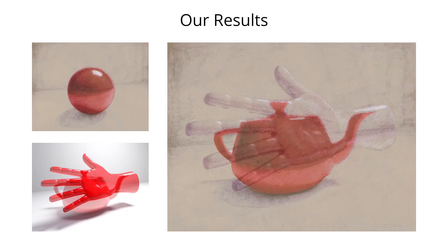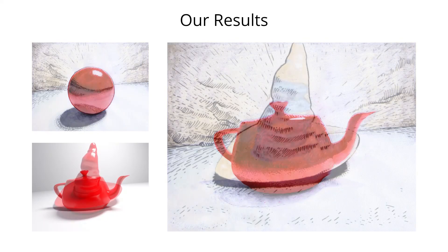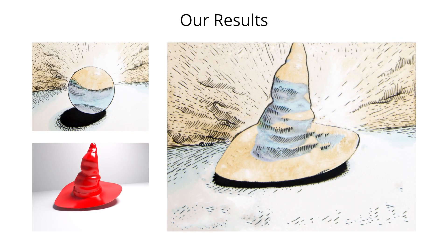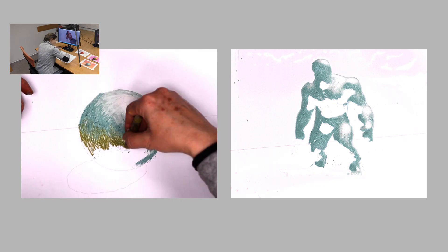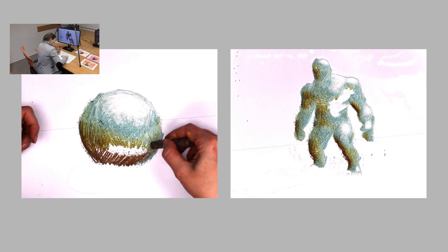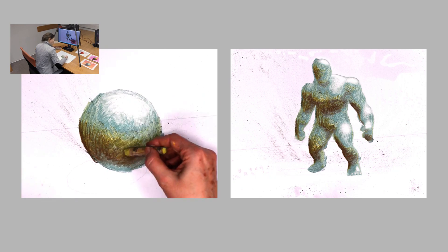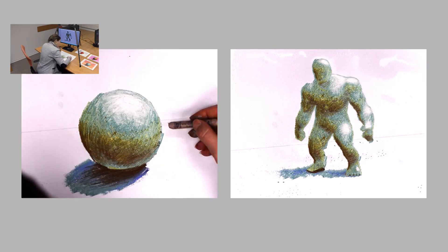Style from a simple model can thus be transferred to various other models in similar settings. Here, we apply our method in an interactive physical setting. The artist can practice stylizing and shading a simple geometric model, such as a sphere, and immediately receive feedback on how their style translates to a more complex one.